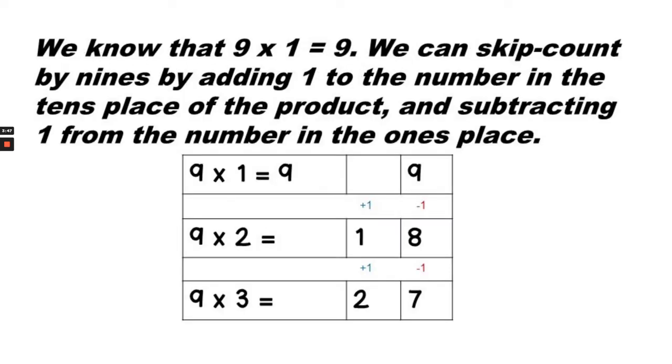We know that 9 times 1 equals 9. We can skip count by 9s by adding 1 to the number in the tens place of the product, and subtracting 1 from the number in the ones place. So 9 times 1 equals 9. There's nothing in the tens place, and there's a 9 in the ones place.